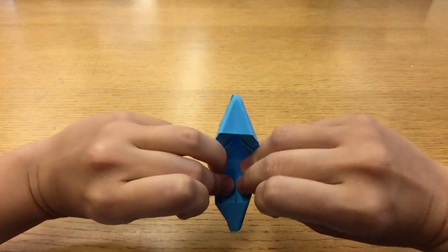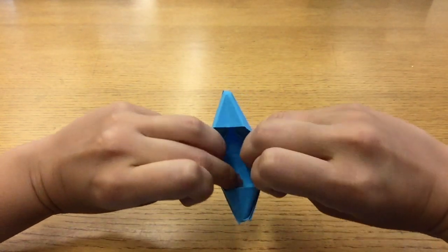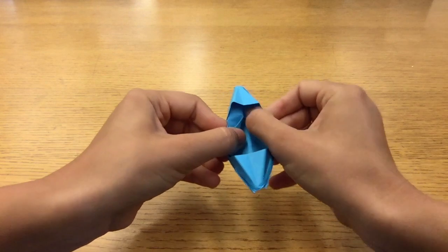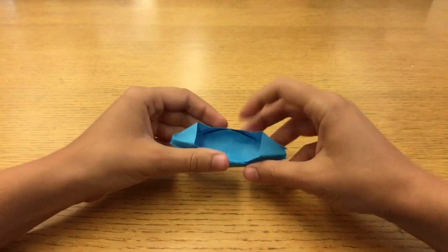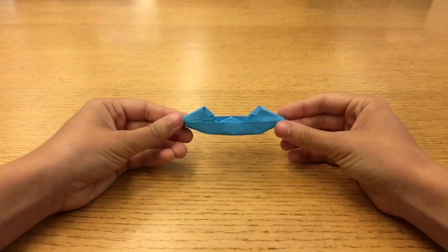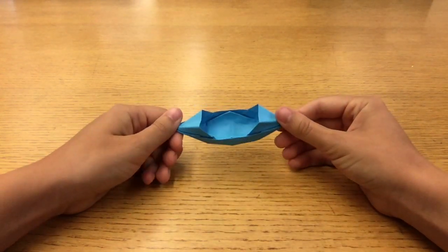Use your fingers to gently push out the pockets. Don't force the paper or it will rip. Keep going until all the angles are turned out and the bottom of the boat is smooth. Now your origami boat is ready.